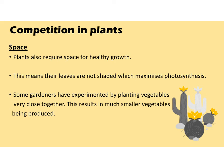The last thing plants compete for is space — space for the roots and the canopy of trees. Plants require enough space for healthy growth: if there's not enough root space, the plant won't get enough water, and if there's not enough canopy space, the tree won't get enough light. Some gardeners have experimented by planting vegetables very close together and found that much smaller vegetables were produced — the less space you give a plant, the less it will grow.